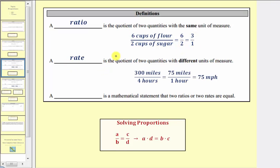Next, a rate is the quotient of two quantities with different units of measure. For example, let's say you go on a trip and travel 300 miles in four hours. The rate would be 300 miles per four hours. And notice this fraction here does simplify. There's a common factor of four. We can also express this rate as 75 miles per one hour, often expressed in this form here as 75 miles per hour.